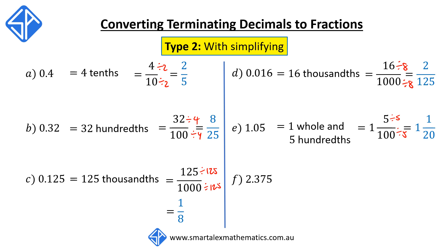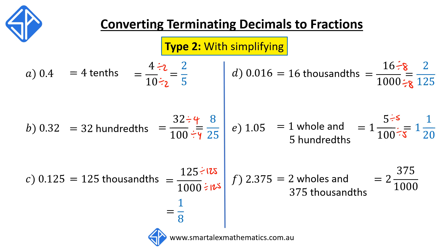Last example, we've got 2.375. Again, we've got the whole part and the fractional part. Here we've got two wholes and three digits after the decimal point, giving us 375 thousandths. So as a fraction, we first write it as 2 and 375 over 1000, but then we can divide top and bottom of the fraction by 125, and this gives us two and three eighths.